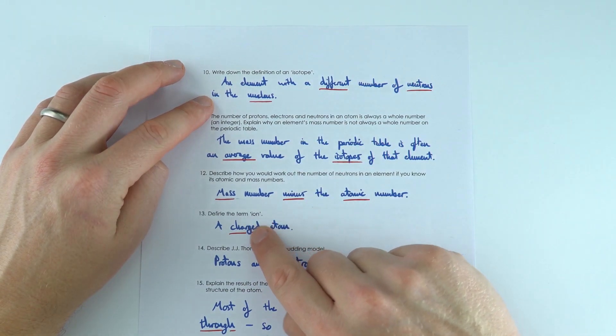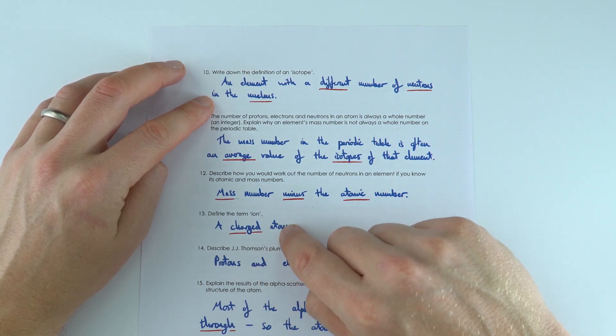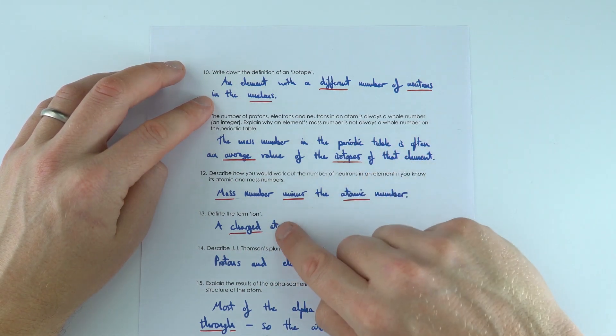Whereas if you've got an ion, that is a charged atom, so it might be positive or negatively charged because it's gained or lost electrons.